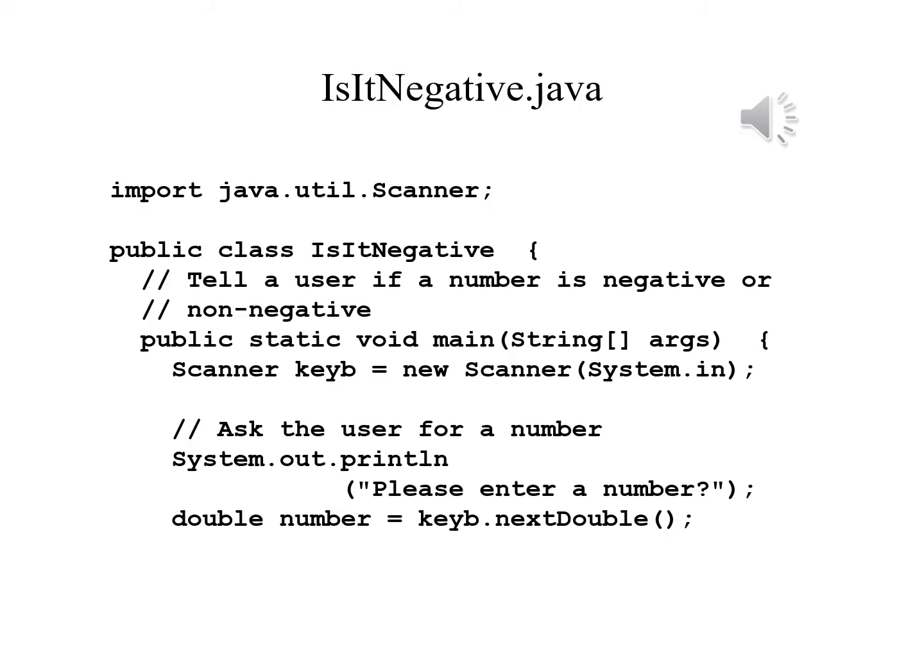We have the program isitnegative.java. We begin as usual: import java.util.Scanner with a semicolon at the end. We begin the class with a header — public class IsItNegative — and a comment saying that we are going to tell the user if the number is negative or non-negative. We say non-negative because it could be positive or it could be zero.